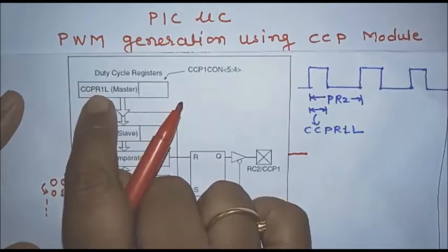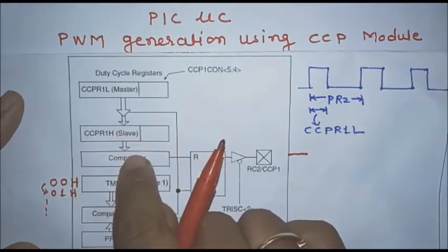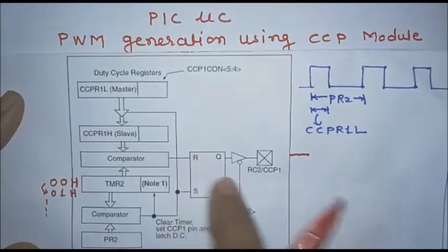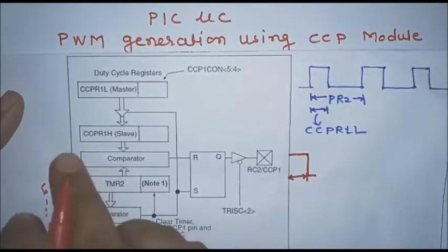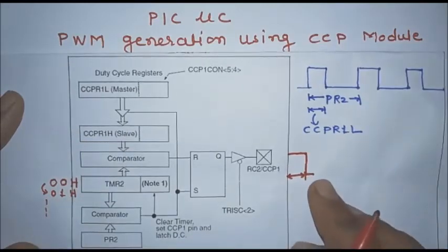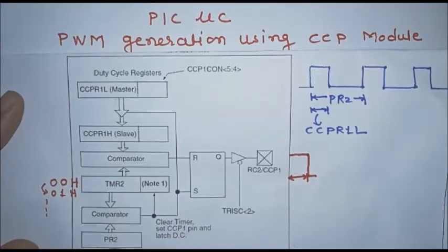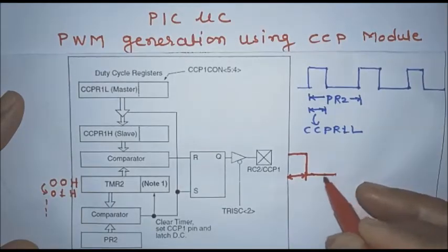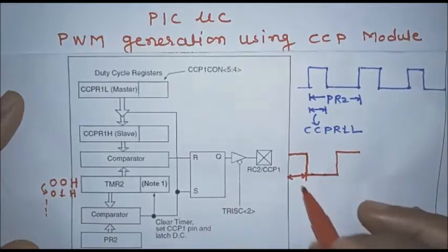The user loads the count in CCPR1L only. TMR2 contents are first compared with CCPR1H, and when both are equal, a signal is sent to the reset pin of the flip-flop, so the output resets to 0. The T-on period is related to the count stored in CCPR1H. Then the second comparator begins comparing TMR2 contents with PR2. When equal, it sets the flip-flop and output switches from logic 0 to logic 1, and the cycle repeats.